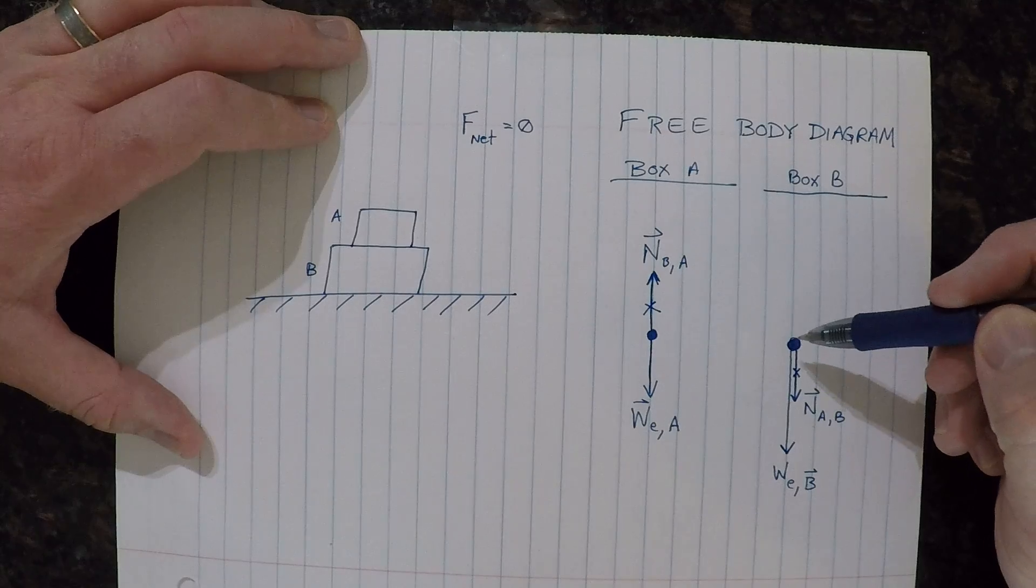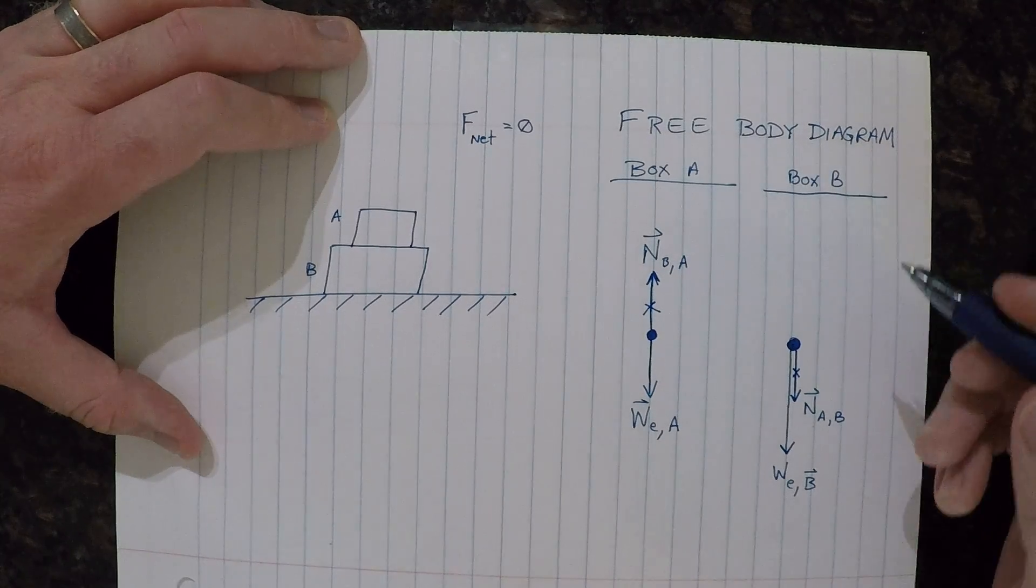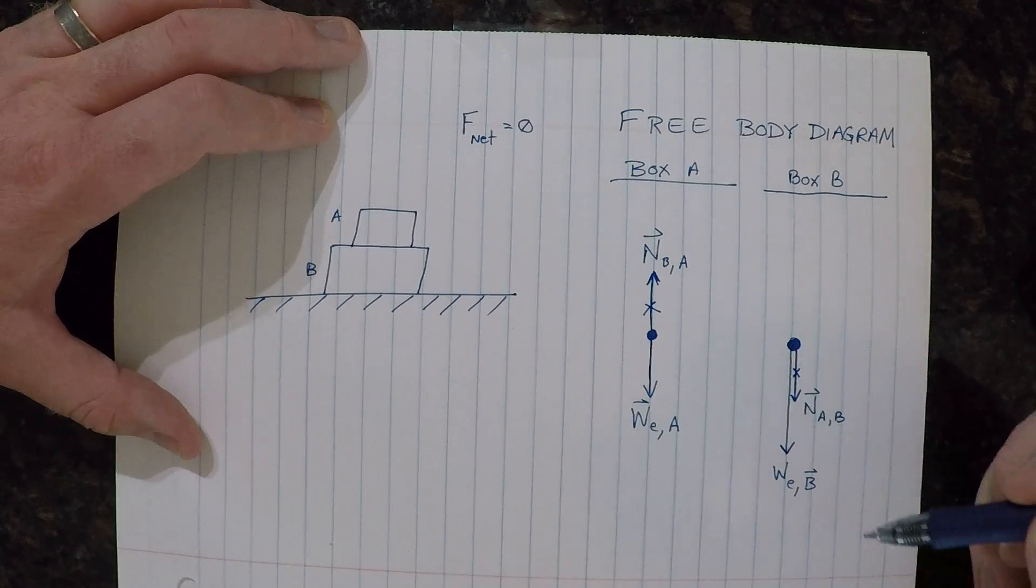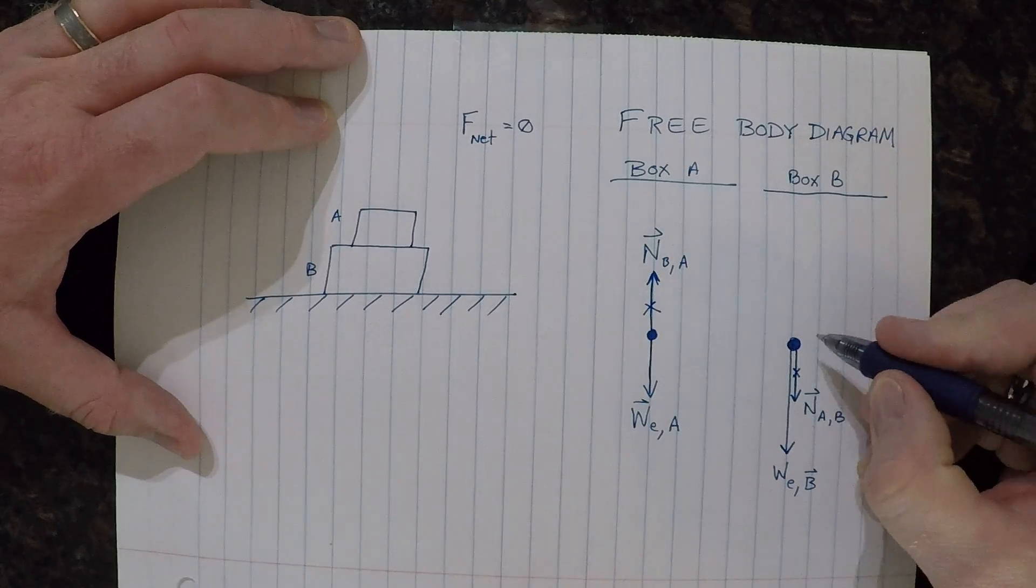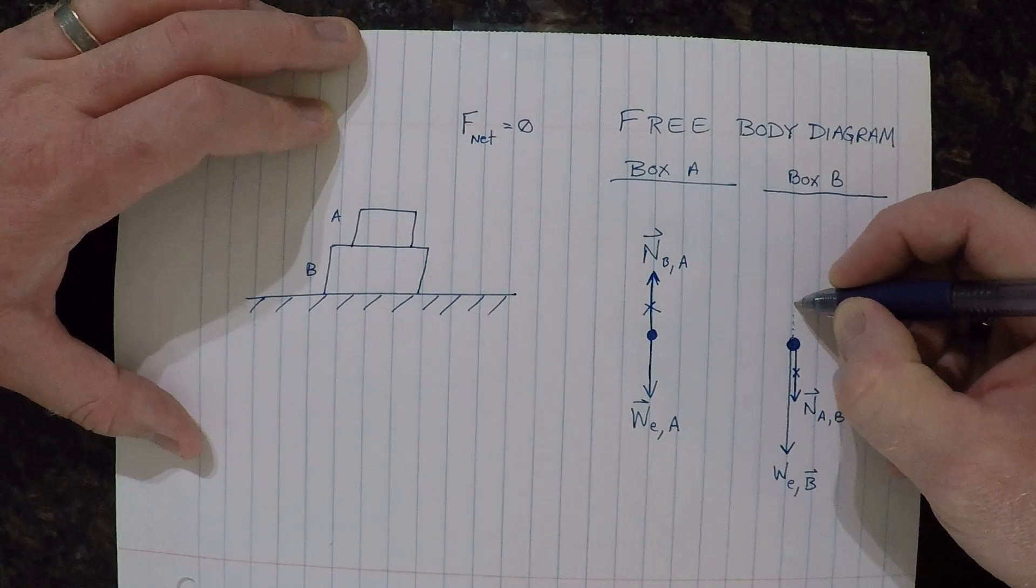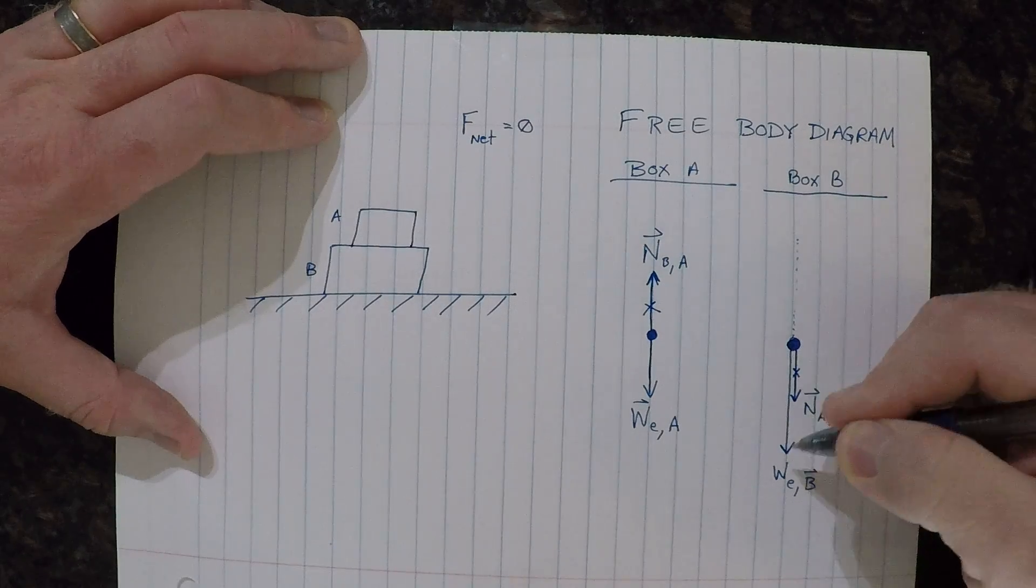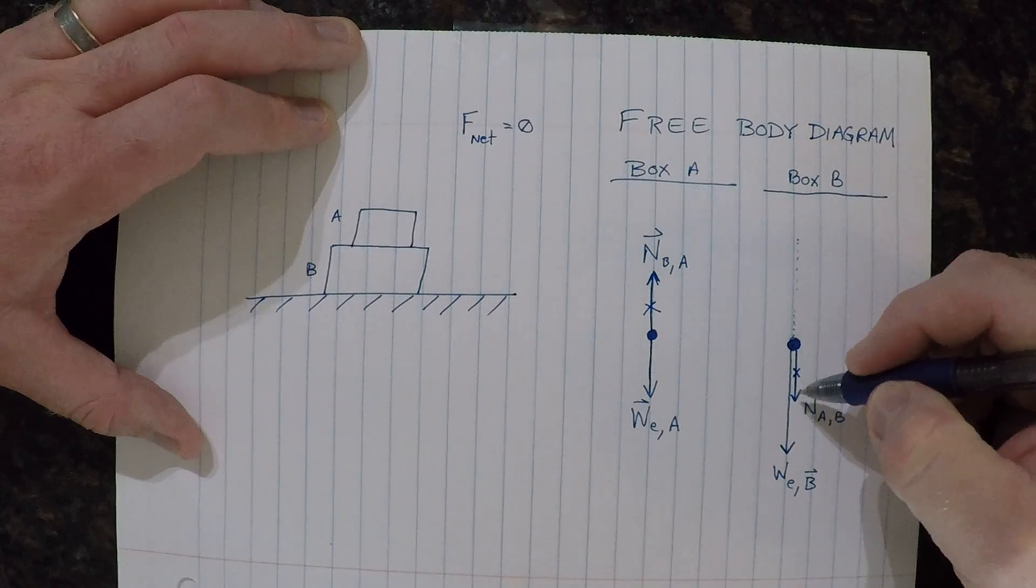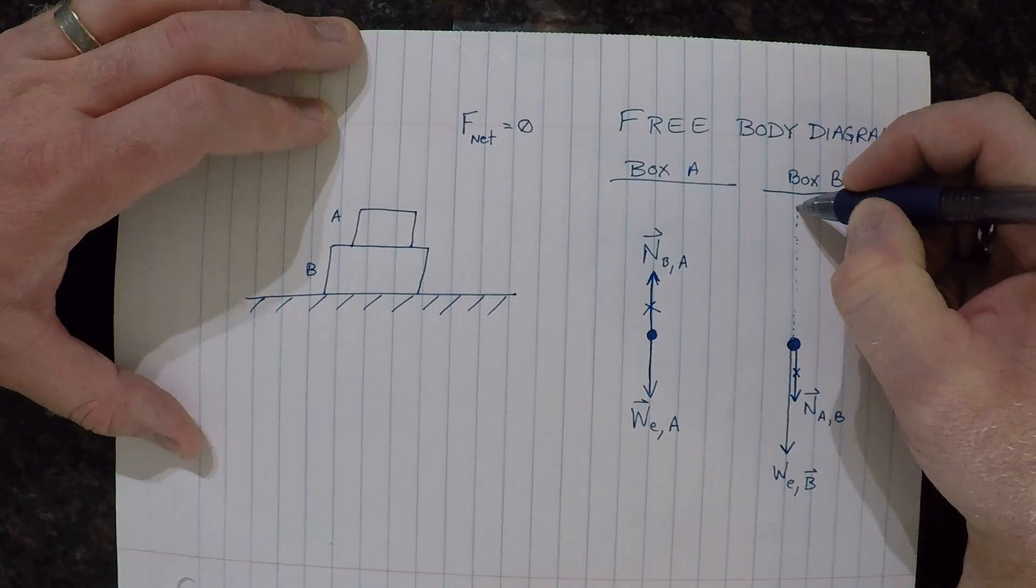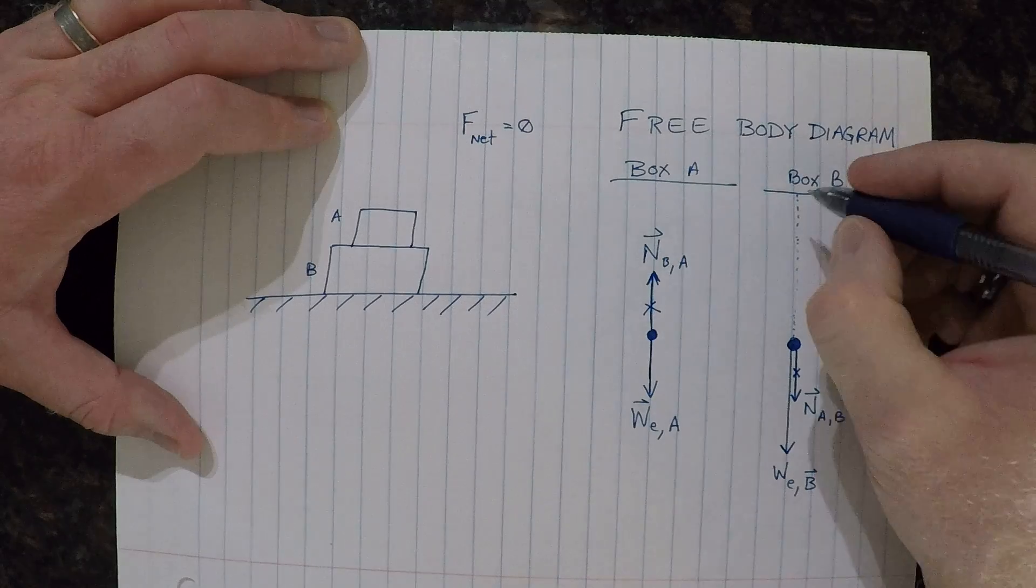Now I can complete the diagram. The normal force that is pointing up or pushing up on box B has to be equal to the sum of these two forces that are pulling down. So if I add this force to this one, well, I'm going to have to go up about the amount that I have in the weight pulling down and I'll have to add about this much force equal to the normal force pulling down.